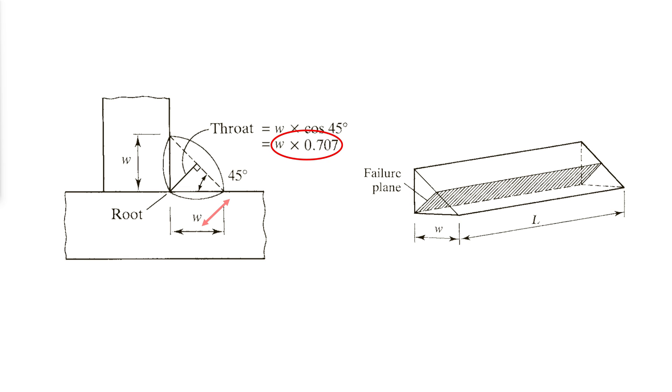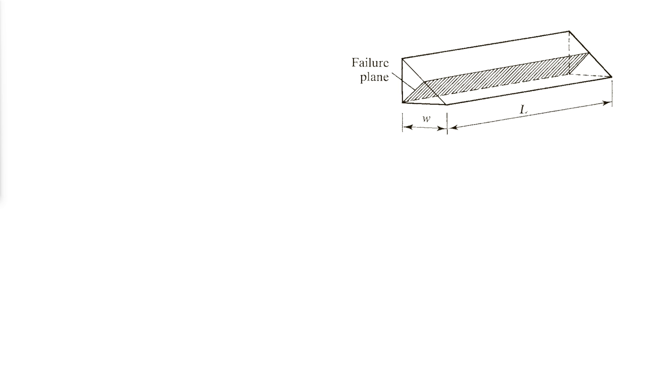Thus, for a given length of weld L subjected to a load of P, the critical shearing stress is the load P divided by 0.707 times the size of the weld W times the length of the weld L. If the weld ultimate shearing stress FNW is used in this equation, the nominal load capacity of the weld can be written as 0.707 times W times L times the ultimate shear strength of the weld FNW.